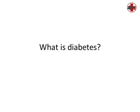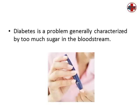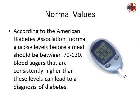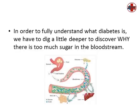What is diabetes? Diabetes is a problem generally characterized by too much sugar in the bloodstream. According to the American Diabetes Association, normal glucose levels before a meal should be between 70 and 130. Blood sugars that are consistently higher than these levels can lead to a diagnosis of diabetes. In order to fully understand what diabetes is, we have to dig a little deeper to discover why there is too much sugar in the bloodstream.